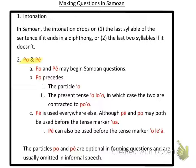Po and pe may begin Samoan questions. Po comes before the particle 'o', so if the particle 'o' comes after the question word, you use po. Or with the present tense marker 'o lo o', since the particle 'o' is in that, the two are contracted to 'po o'. So if you want to form a question with 'o lo o' right after it, you just use 'po o'.